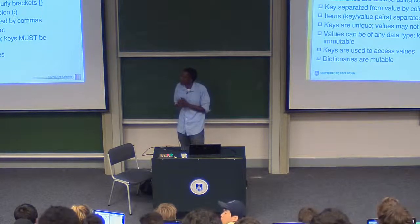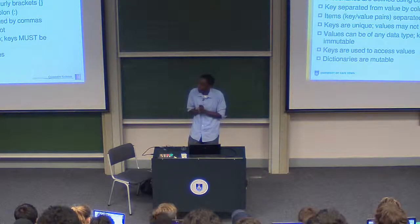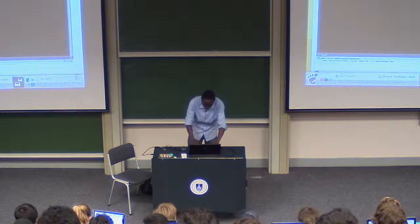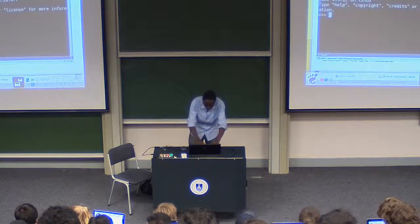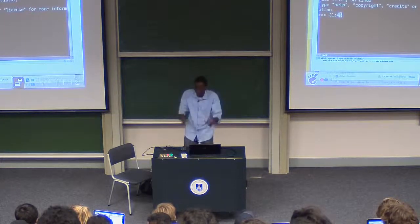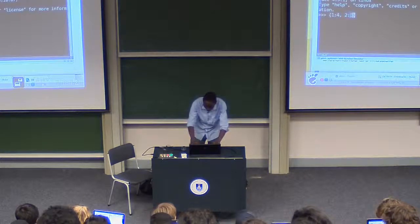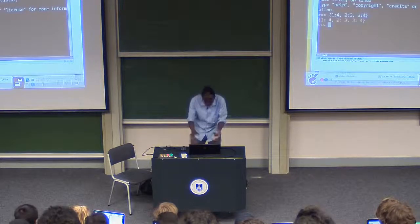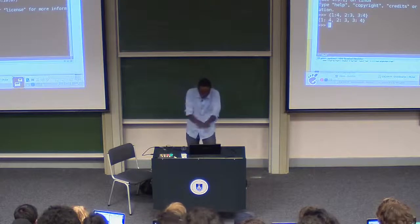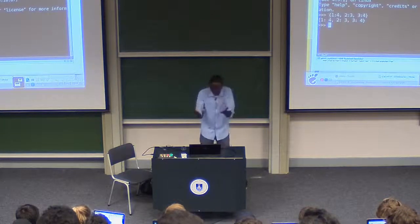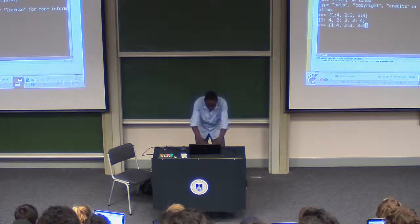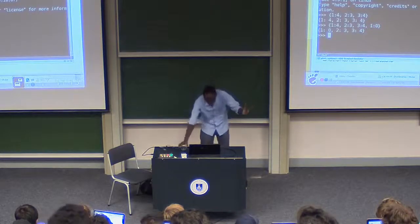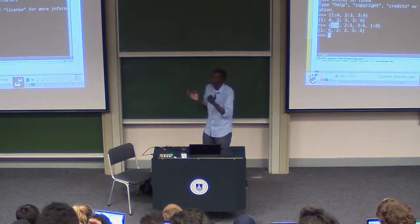Someone asked about key uniqueness. What we mean is: if we're creating a dictionary with duplicate keys — say key 1 with value 3 and also key 1 with value 0 — you notice that the four is a duplicate value, which is fine. But if we add a duplicate key, it overrides the previous value. The last defined value for a duplicate key becomes the actual value.